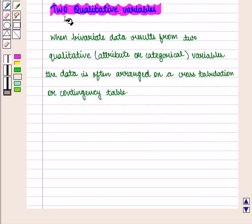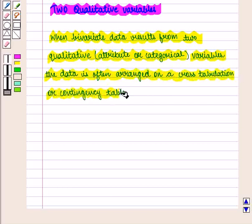Now we will discuss two qualitative variables. When bivariate data results from two qualitative, that is attribute or categorical variables, the data is often arranged on a cross tabulation or contingency table.